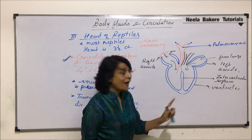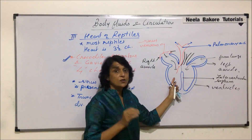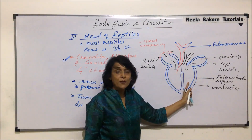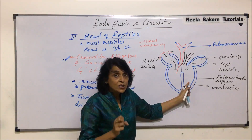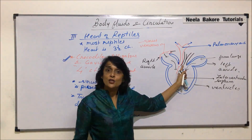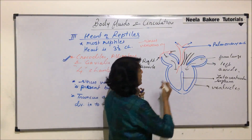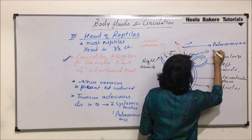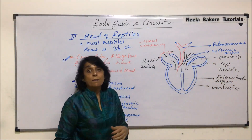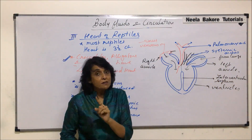The branches drawn in black arise from the left side. Later, when partitioning is complete, oxygenated blood from the left auricle will come into the left ventricle. When this contracts, it takes oxygenated blood, which should go through the aorta or systemic arches. So these two are the systemic arches. In reptiles there are two systemic arches, whereas when we come to birds and mammals, there is only one systemic arch.